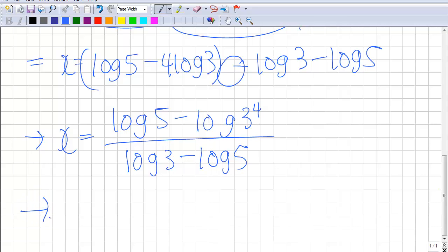Still using the quotient law, I'll just simplify even more. So you end up with log 5 over 81 over log 3 over 5.